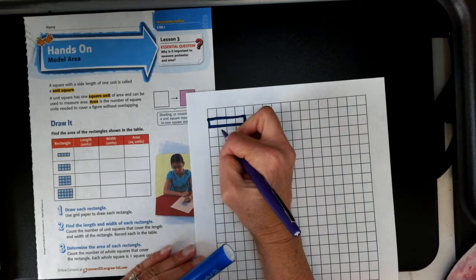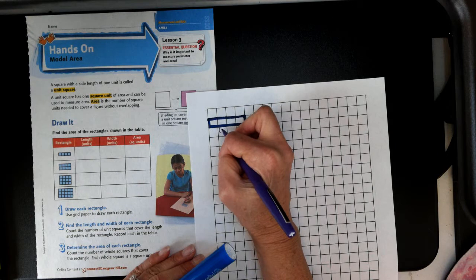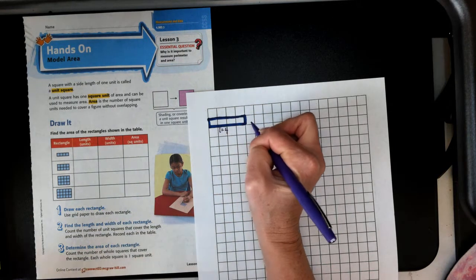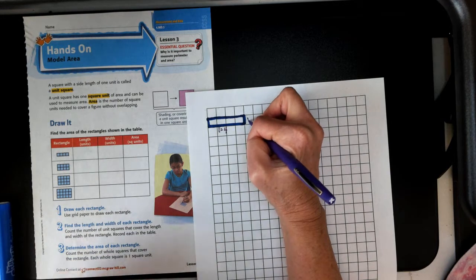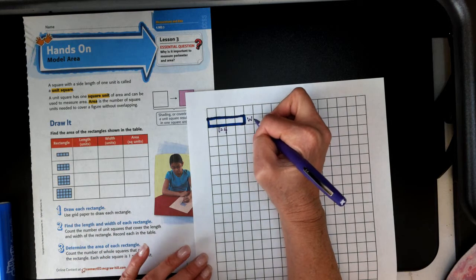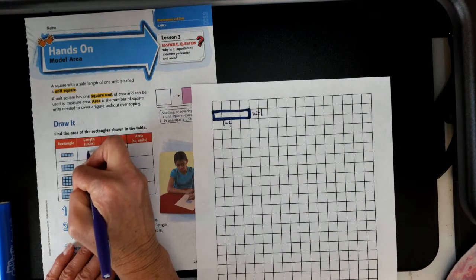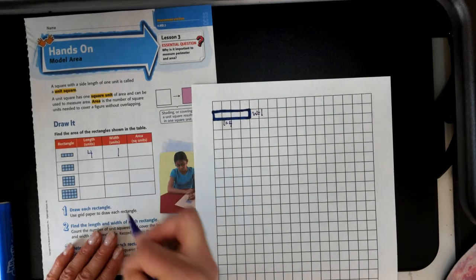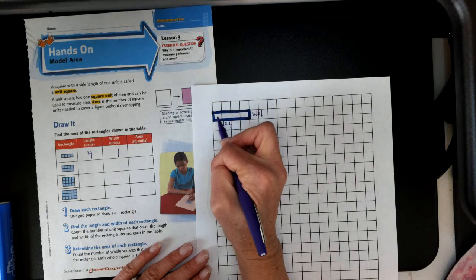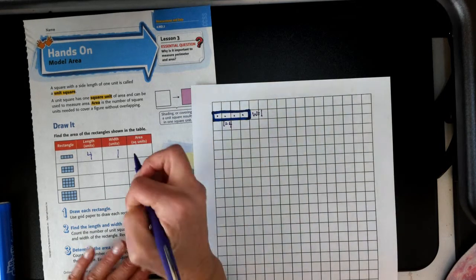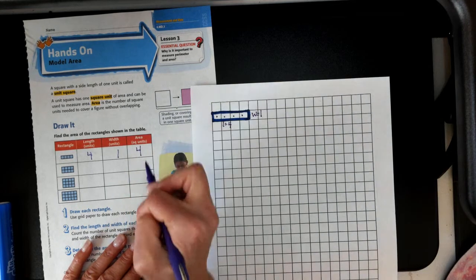And then I'm going to label the parts. This side is the length. Length equals four. There's four going across. And then the width, that's how high it is. That is just one. So I'll write that in my chart. And how many squares do we have? One, two, three, four. Four square units.